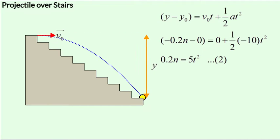Now, we analyze the y-motion and we apply the second equation of motion along the y-axis: y minus y0 equals v0t plus half at squared. The initial y-displacement y0 is 0. And the final y-displacement is minus 0.2 times n since we are given that it strikes the nth step and each step has a uniform height of 0.2 meters. And the negative sign is because this displacement is in the negative y-direction.